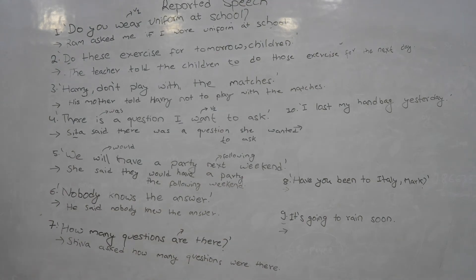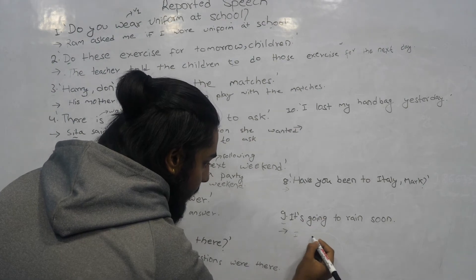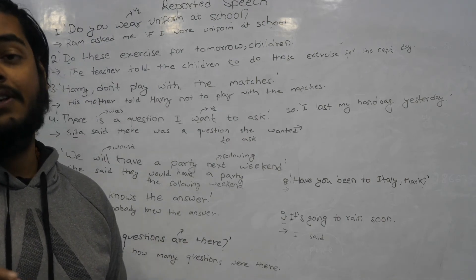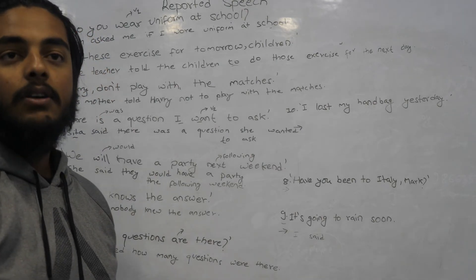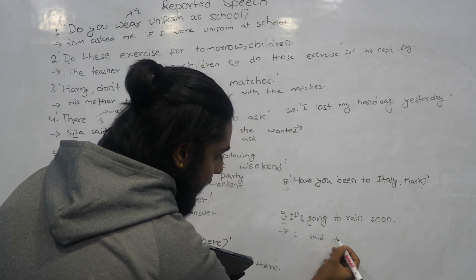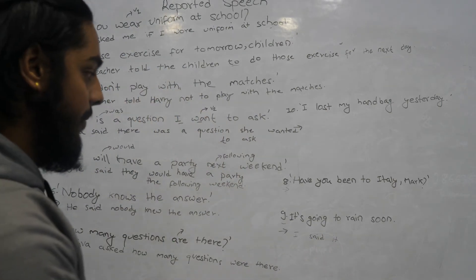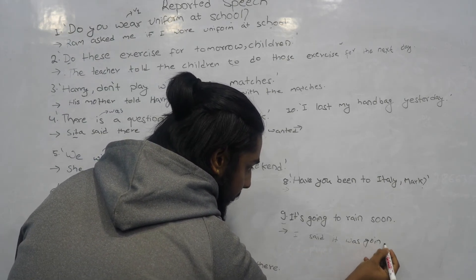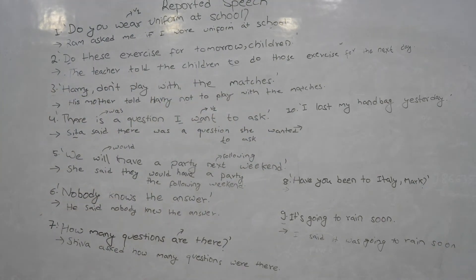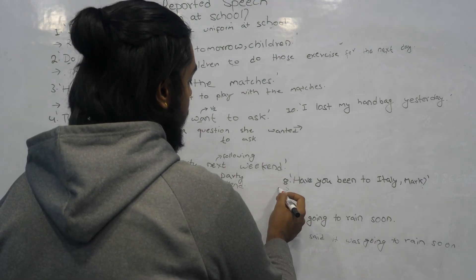Number eight: 'It's going to rain soon.' I said that it's going to rain soon. This is present continuous tense. In indirect speech it becomes past continuous: 'was going to.' So: I said it was going to rain soon.